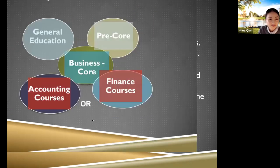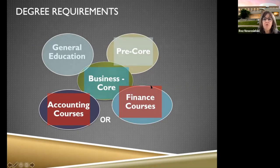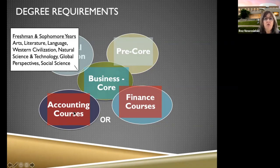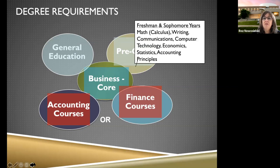If we look at some of the requirements — and some of these will overlap — as you start out through the general education requirements, you're going to be looking at your freshman and sophomore years studying the arts and literature, Western civilization, and science requirements. Some of those skills you'll bring in through testing from high school programs. The pre-core gives you the platform to start developing your skills: writing and communications, calculus and math courses, econ courses, stats, and accounting principles.